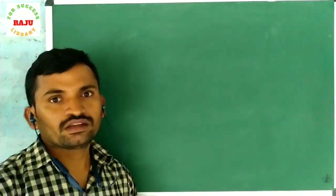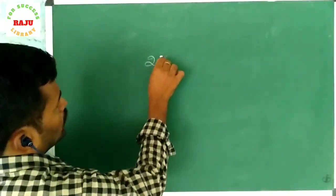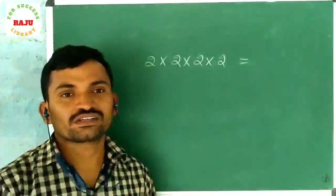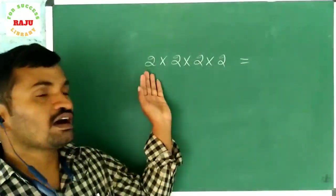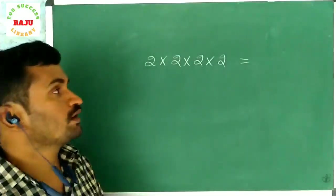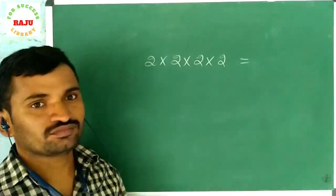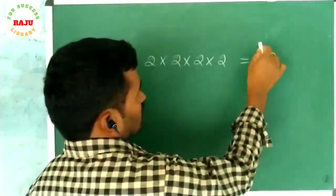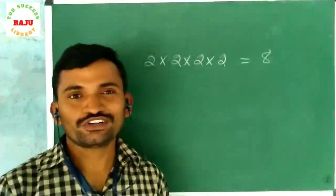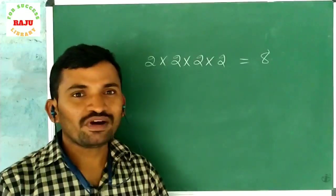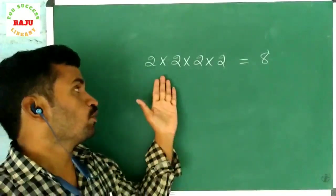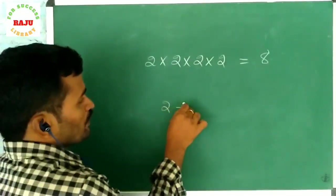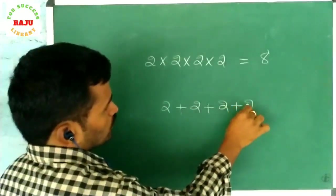Now look at the board: 2 into 2 into 2 into 2. What is the answer? Some students may say the answer is 8, but they need to look carefully — what sign is given here: plus or into? Previously I told you 2 plus 2 plus 2 plus 2. Here the sign matters.